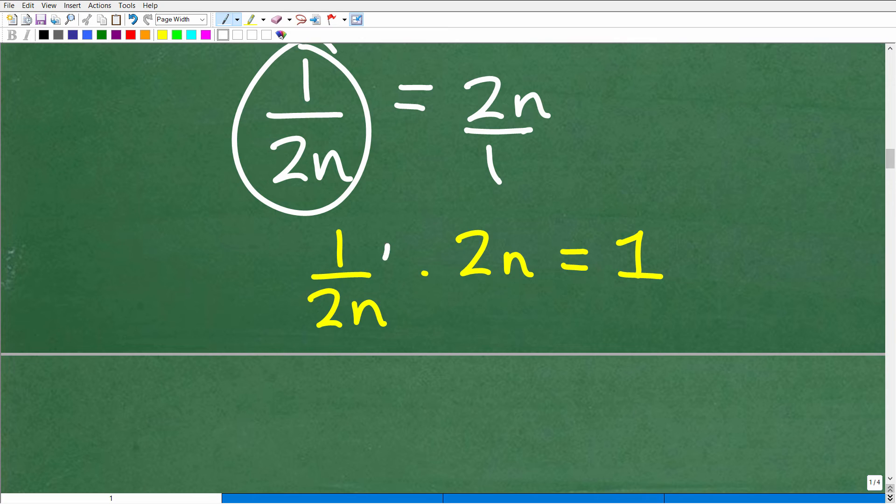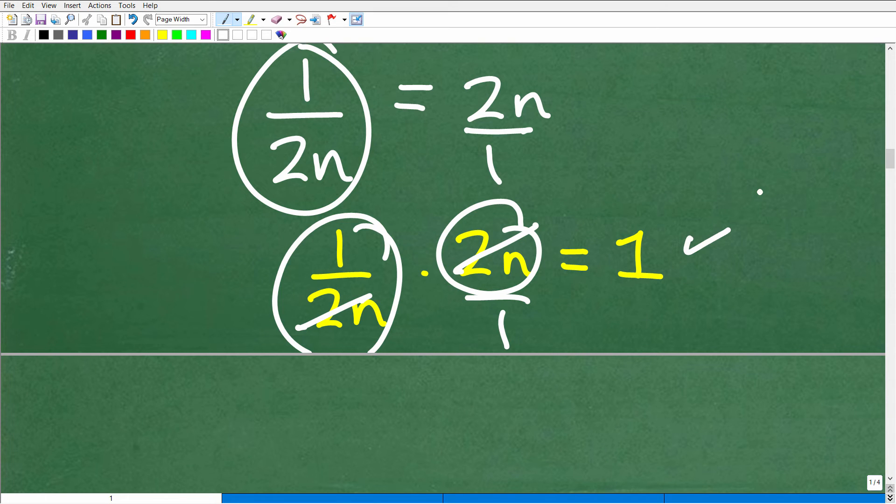And of course, we could verify that, right, because 1 over 2n times 2n or 2n over 1 is equal to 1. These 2n's cross-cancel, you've got 1 over 1, which is 1.